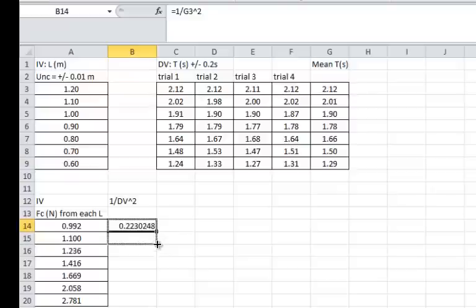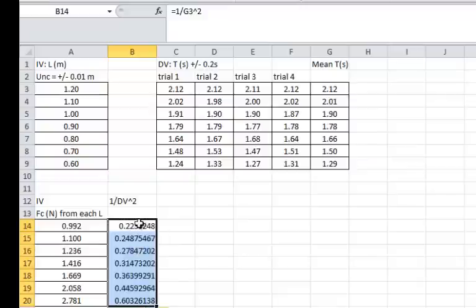If you drag down the little tiny X, this is the little tiny X right there, if you click on it and drag down, it does the same exact calculations for each of the numbers over there. So you can do it by hand or you can have Excel do it for you.